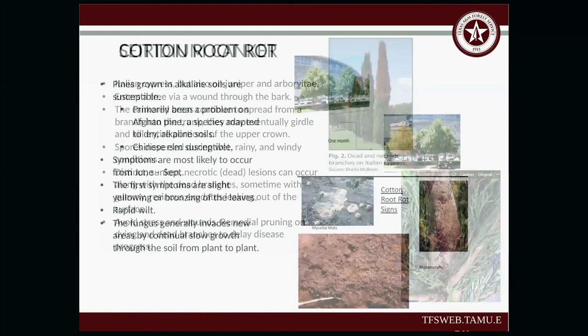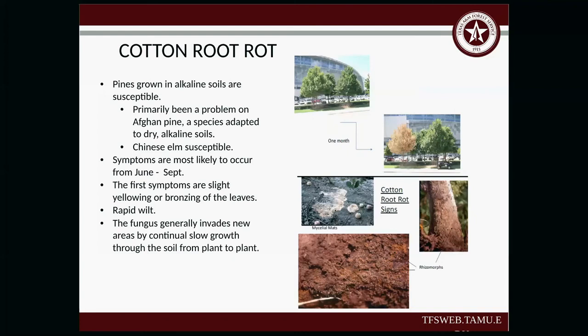Cotton root rot — pines growing in alkaline soils are susceptible. It has primarily been a problem in Afghan pine — a species adapted to dry alkaline soils. Chinese elm is also susceptible. Symptoms occur between June and September. Your first symptoms are slight yellowing or bronzing of the leaves, then rapid wilt. The fungus generally invades new areas by continual slow growth through the soil from plant to plant — you'll see the rhizomes spread out through the soil.